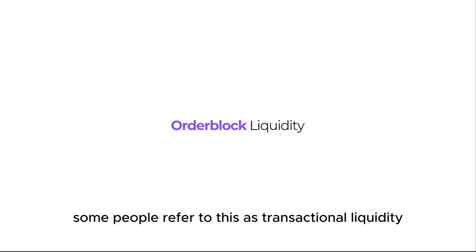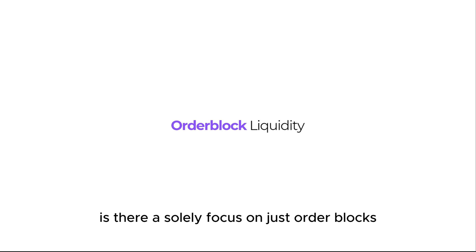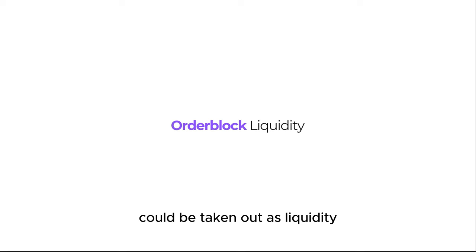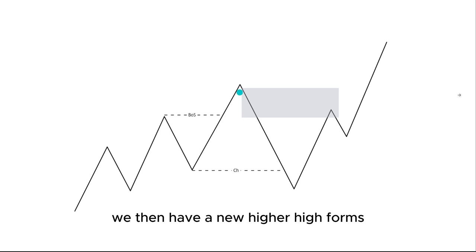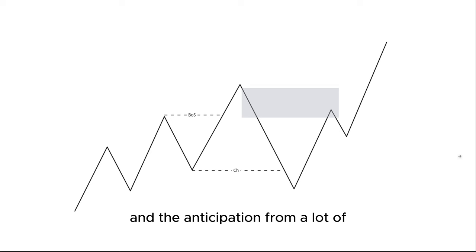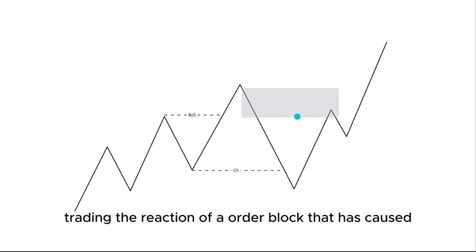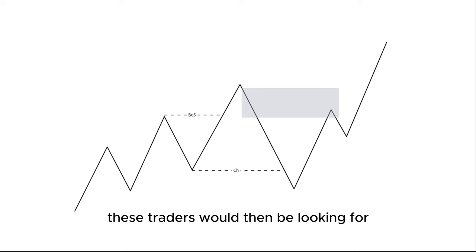Another form of liquidity is order blocks — some people refer to this as transactional liquidity, but we can refer to them as the same thing. One of the most common things I see, especially from traders using smart money concepts, is being solely focused on order blocks and a change of character. Let's look at a situation where a smart money trader could be taken out as liquidity. Here we see a bullish trend pushing to the upside, a break of structure, a new higher high formed, then price breaking to the downside past this low — creating a change of character, meaning the market has now formed a new low.